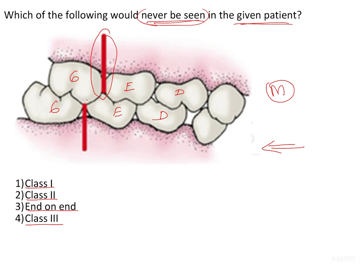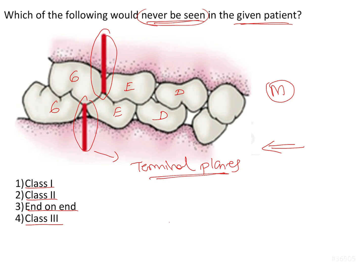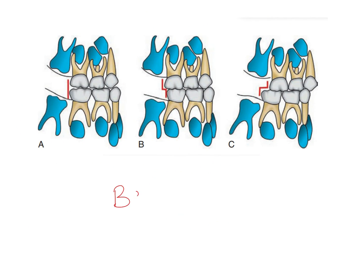The red lines demarcating these areas are the terminal planes. The terminal planes are the distal surfaces of the second deciduous molars. The relationship of these terminal planes of the maxillary and mandibular second deciduous molars to each other describes the classification of the molar relationship in deciduous dentition. This classification was given by Bohm, also known as Bohm's classification.